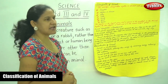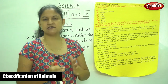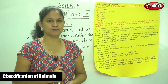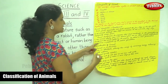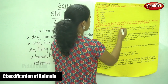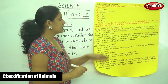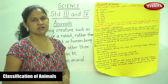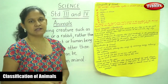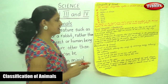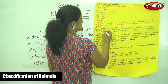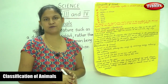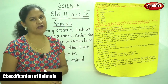Next we are going to see animal reproduction and development. There are animals that lay eggs and animals that give birth to young ones just like humans. Birth, growth, reproduction, and death represent the four stages of the life cycle of all animals.